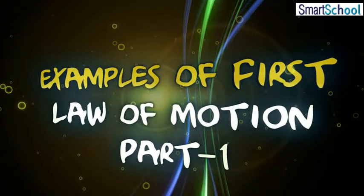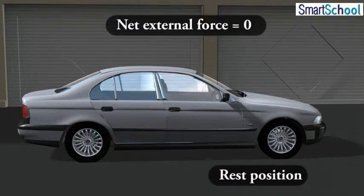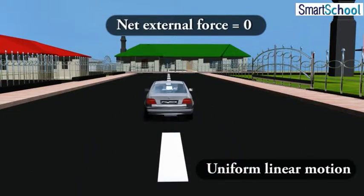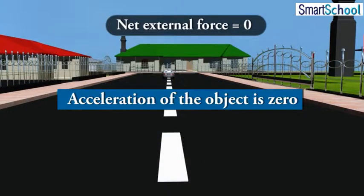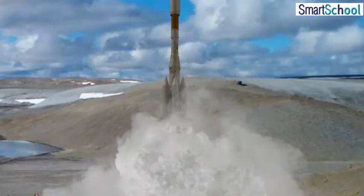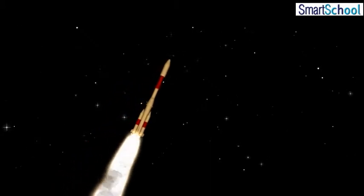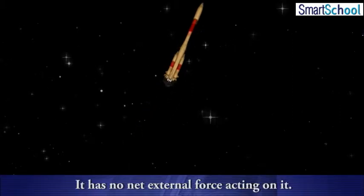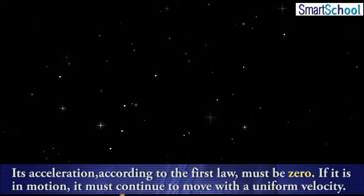Examples of First Law of Motion. In some examples, we know that the net external force on the object is zero. In that case, we can conclude that the acceleration of the object is zero. For example, a spaceship out in the interstellar space, far from all the other objects, and with all its rockets turned off, has no net external force acting on it. Its acceleration according to the First Law must be zero.